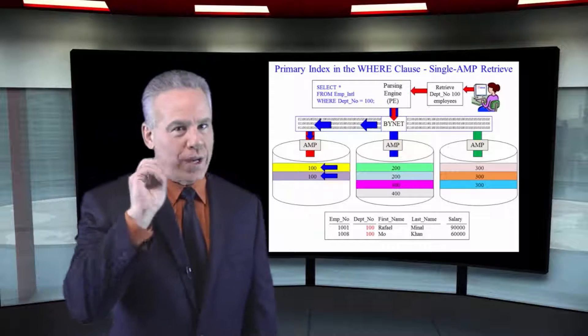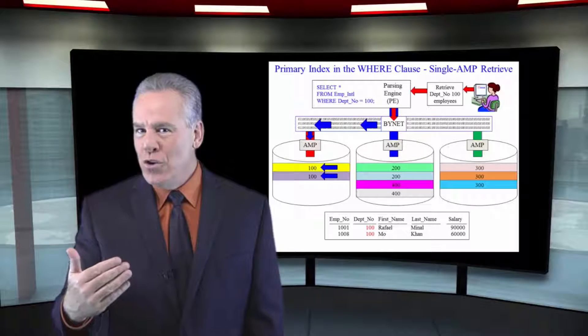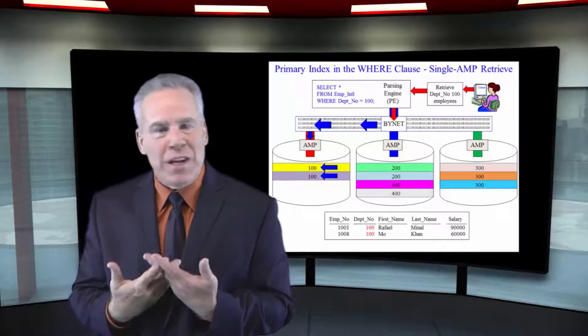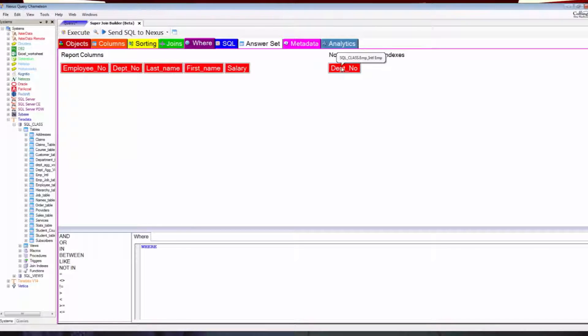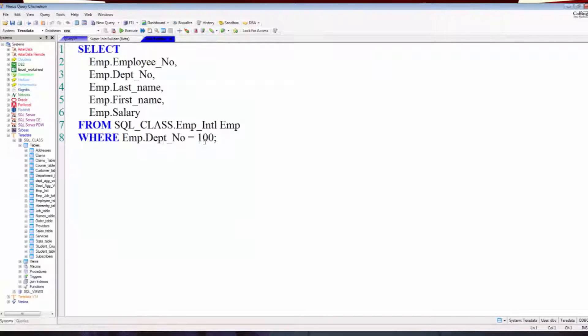Because here's the real key. When you use the non-unique primary index in the WHERE clause, it's a one AMP operation. As you can see here in our query, we're using it in the WHERE clause. Well, all of the rows that were hashed with that value went to the same AMP.